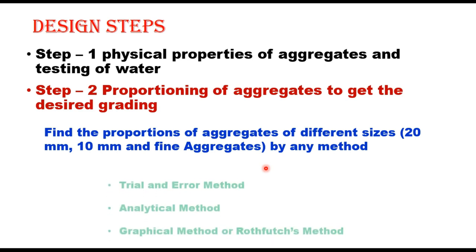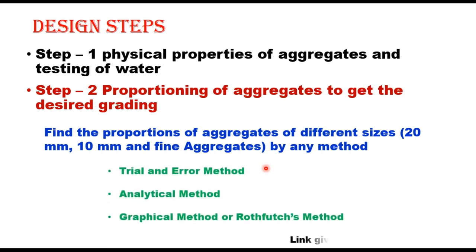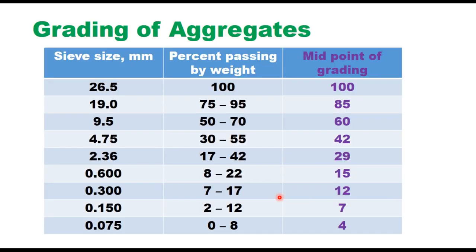Three methods can be used: trial and error method, analytical method, or graphical method (road note method). Any of these methods can be used, but the target should be that aggregate grading is around the midpoint of the specified range for each size, which will give maximum density.